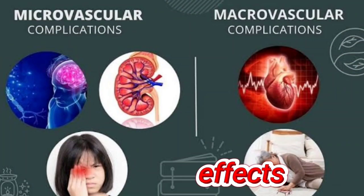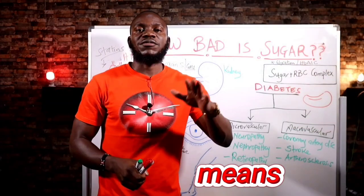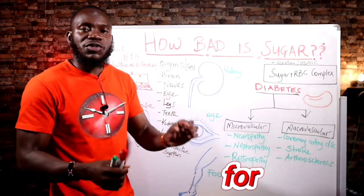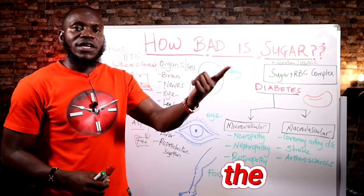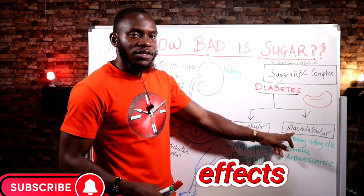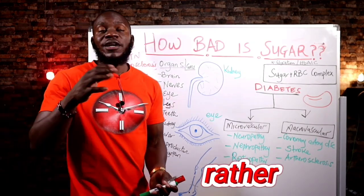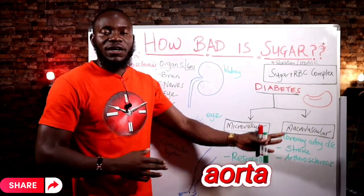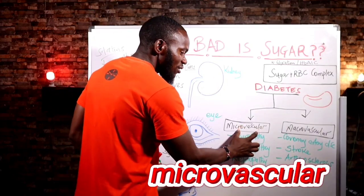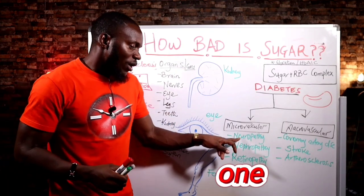Micro means small, vascular means vessels, so microvascular refers to small blood vessels — the venules and the capillaries that supply tissues. Macrovascular effects are for those larger blood vessels like the pulmonary arteries. So for microvascular effects of sugar in the system, there are three: one is neuropathy, two is nephropathy, and three is retinopathy.